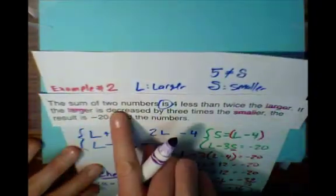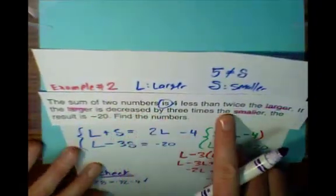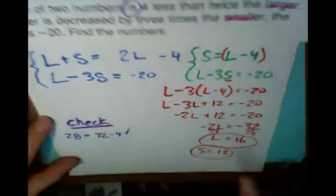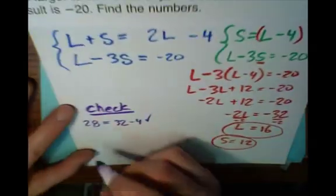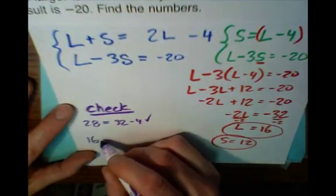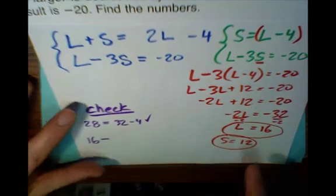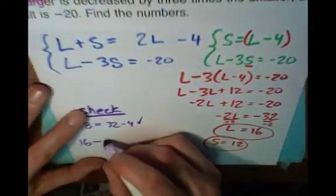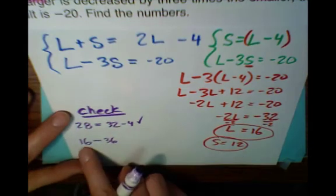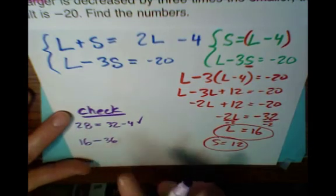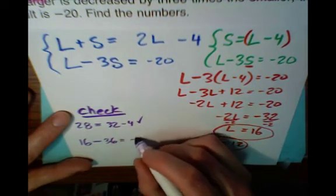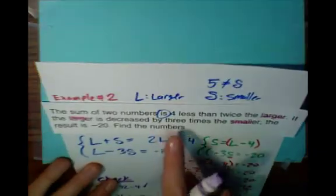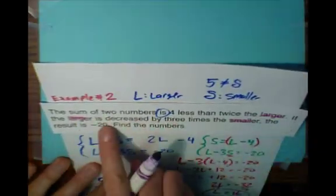Then it says: if the larger is decreased by 3 times the smaller — we start with the larger, 16. Three times the smaller is 3 times 12, which is 36. And 16 minus 36 is negative 20. The problem says the result is negative 20. Check. So my final answer is correct.